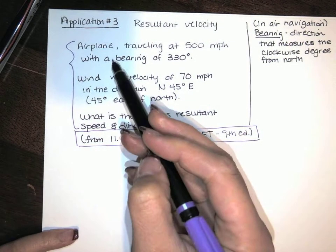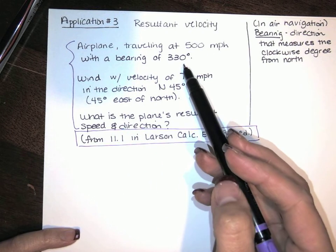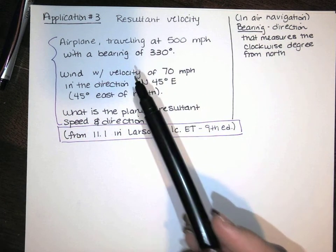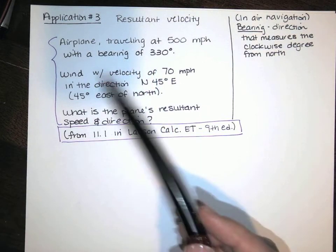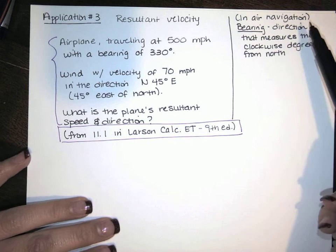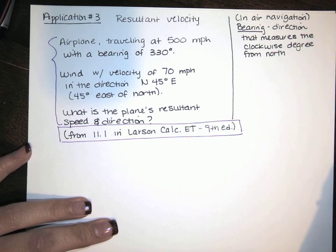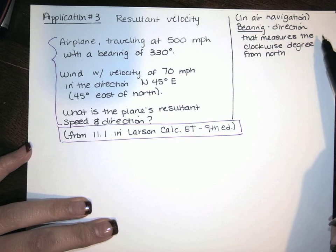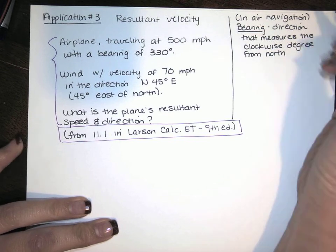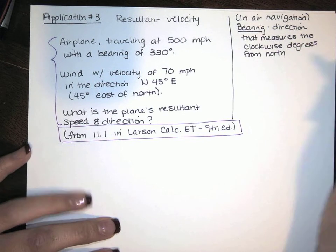We're told that there is an airplane traveling at 500 miles per hour with a bearing of 330 degrees. Until I read this in the book I didn't know exactly what bearing meant. I knew that it gave you some sense of direction, but in air navigation, bearing is a direction — it's measuring the direction clockwise in degrees from north.